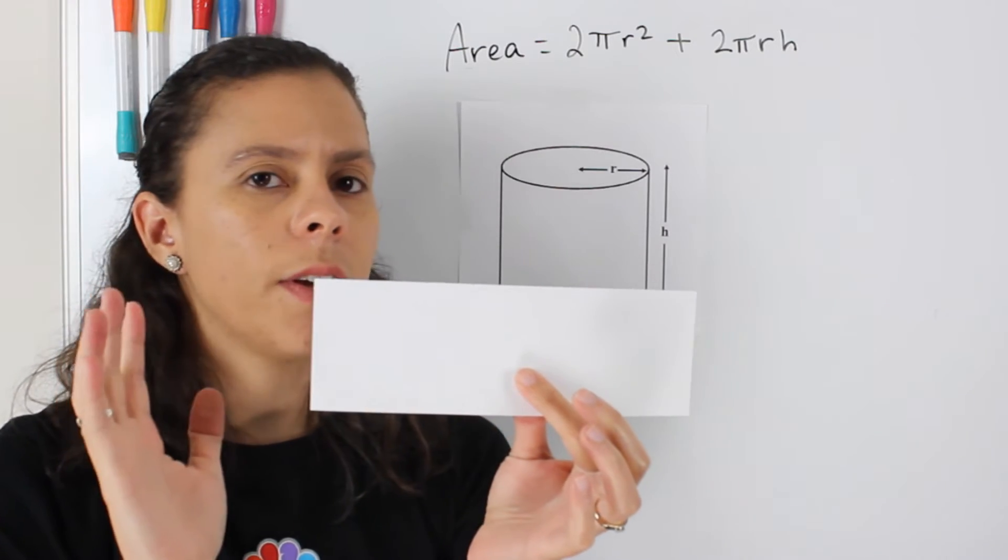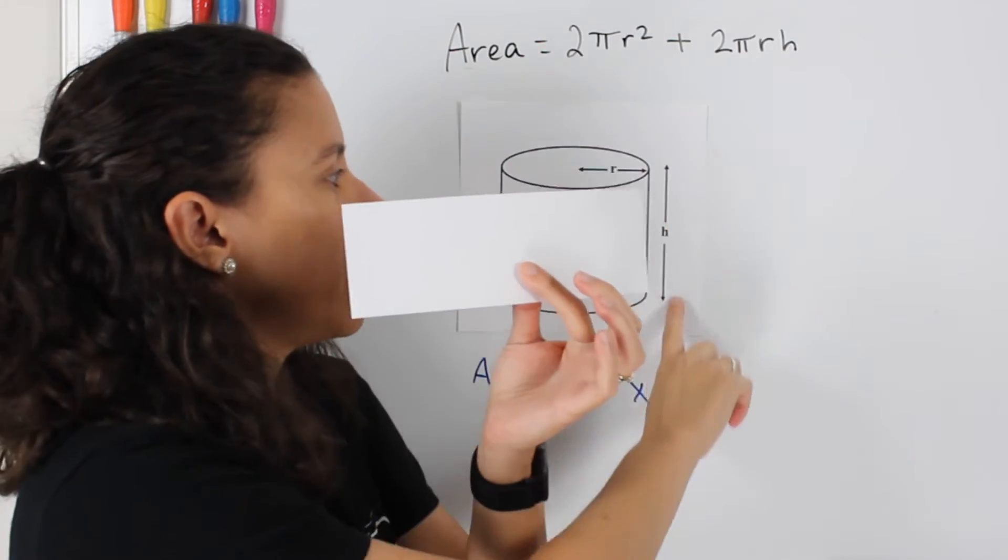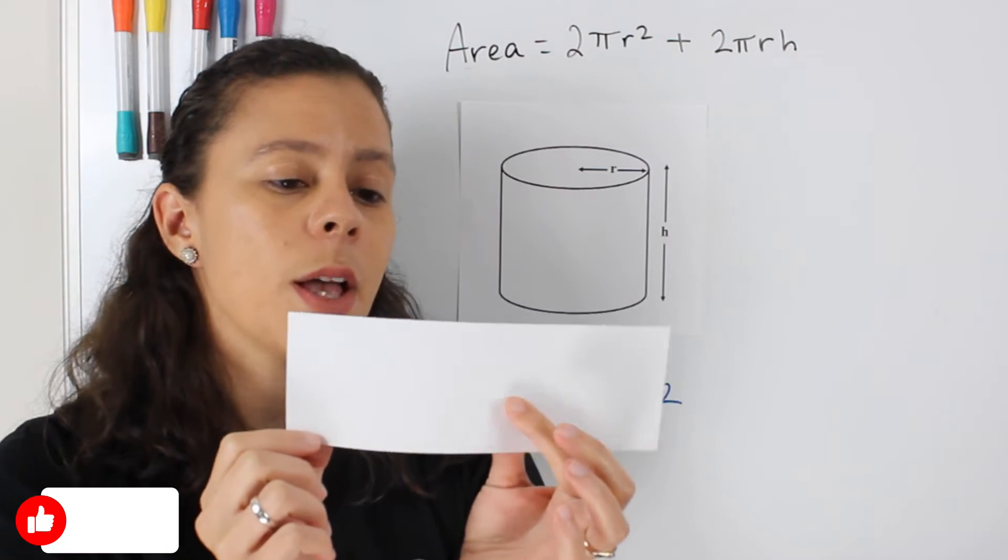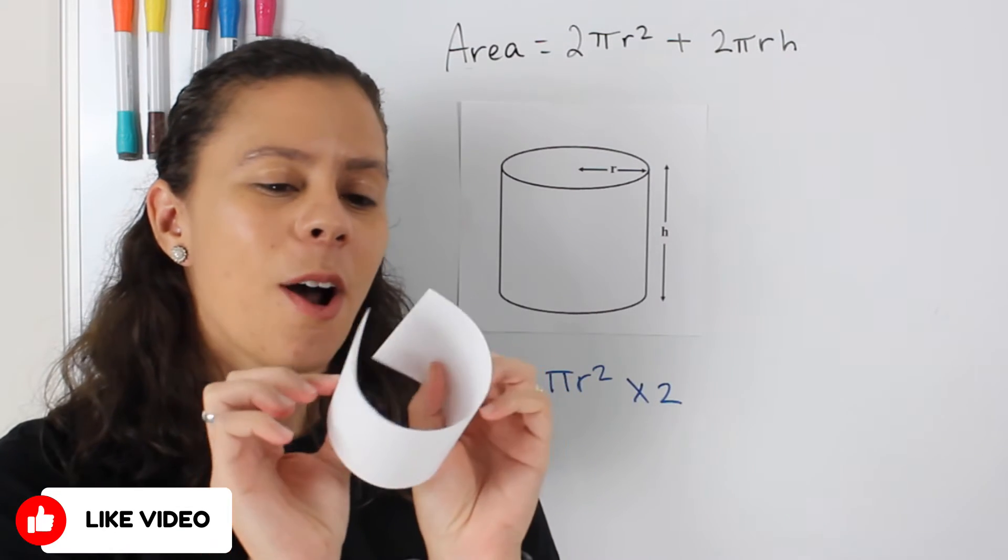And we can find the area of this rectangle by just multiplying the base times its height. Now, the height is very simple. The height is simply whatever the height of this cylinder is,